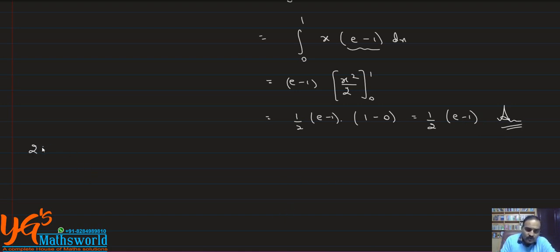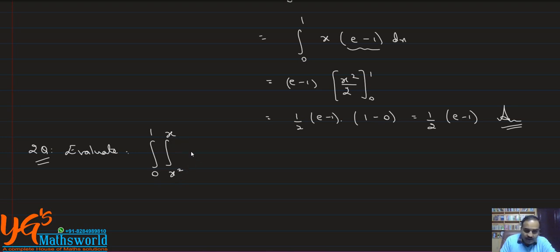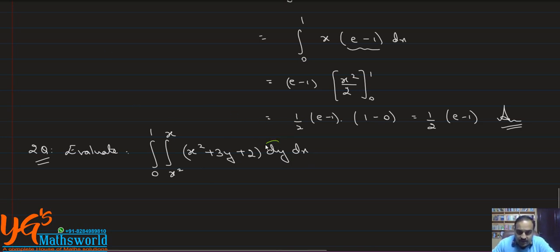We will take one more question. Question number 2: evaluate the double integral from 0 to 1, and from x² to x, of the function x² + 3y + 2, dy dx. Again, we integrate first with respect to y, and the limits of y are in terms of x, whereas the limits of x are constant.